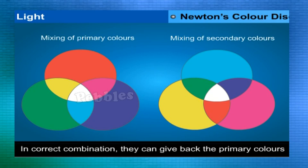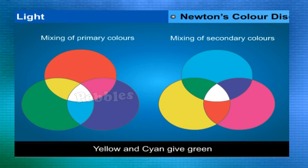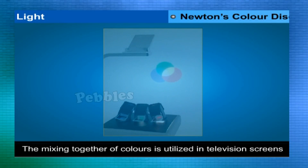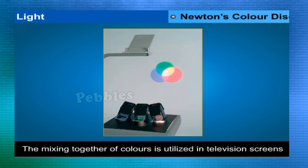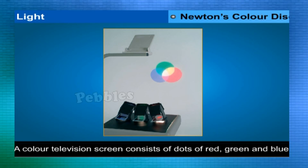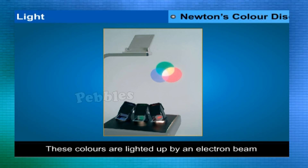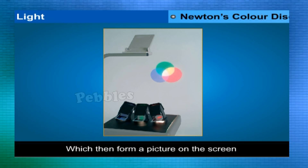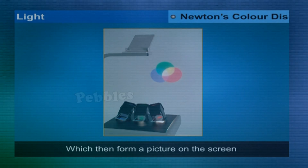In correct combination, secondary colors can give back the primary colors: yellow and cyan give green, cyan and magenta give blue, and magenta and yellow give red. The mixing of colors is utilized in electronic displays like television screens. A color TV screen consists of tiny dots of red, green, and blue present as sets of three throughout the screen. An electron beam sweeps the whole screen in a very short time, lighting up specific colors that form a picture seen from a distance.